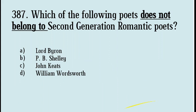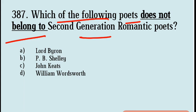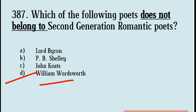Next question: Which of the following poets does not belong to the second generation Romantic poets? Options are Lord Byron, P.B. Shelley, John Keats, William Wordsworth. Correct answer: Option D, William Wordsworth. He does not belong to the second generation; he belongs to the first generation of Romantic poets, known for his poetry style describing nature.